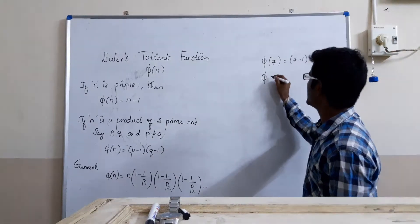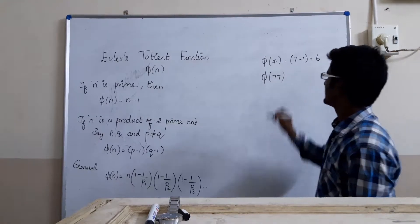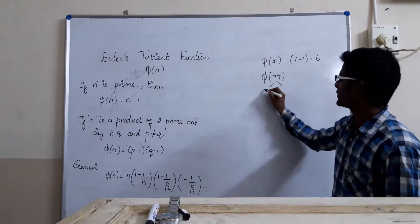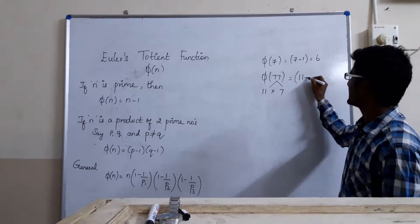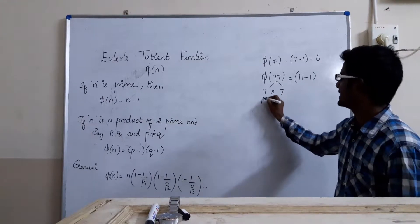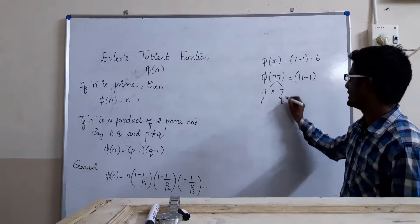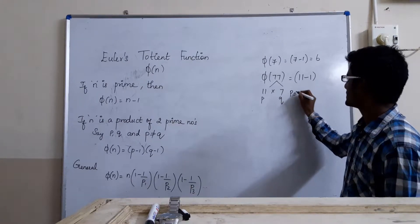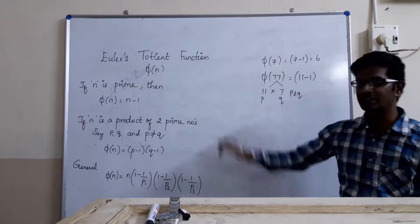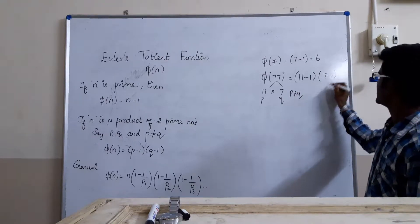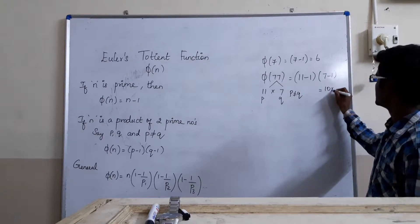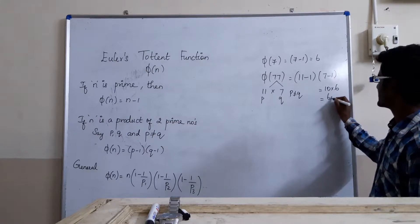For example, phi of 77. This 77 is a product of two prime numbers 11 and 7. In this case, we can write it as (11 minus 1) where p is 11 and q is 7. Remember, p is not equal to q. So we can apply this rule: (11 minus 1) into (7 minus 1) which is equal to 10 into 6, which is equal to 60.